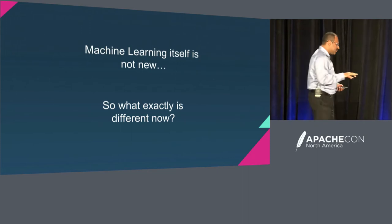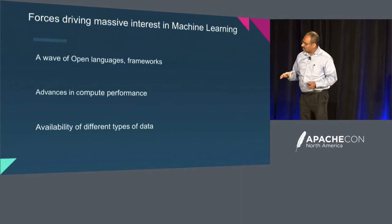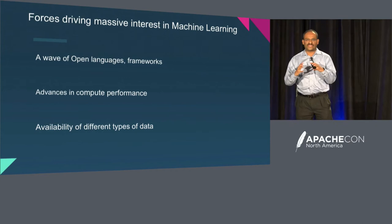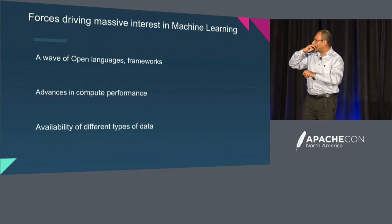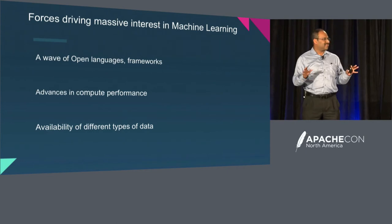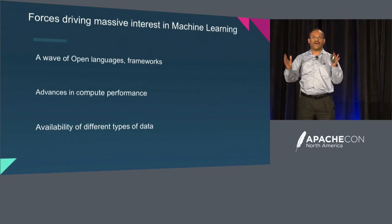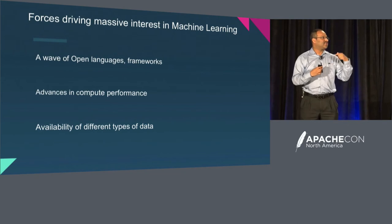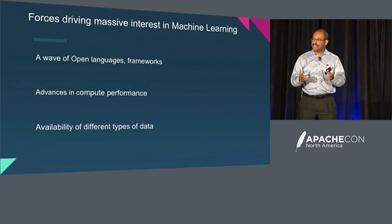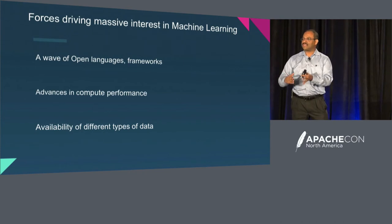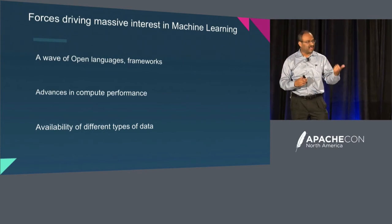Machine learning itself is not new, so what exactly is different now? I think there are three major forces that are coming together to make this happen. Starting in reverse order from what is on the screen: availability of different types of data. You have transactional data all along, but now when you supplement that with other types of data — for example, call center records — who would have thought call center records could be a valuable treasure trove of information that can be coupled with your transactional data.